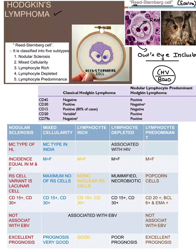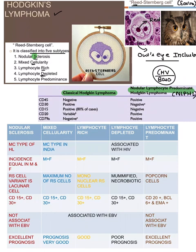We have two types: classical Hodgkin's lymphoma and non-classical, known as NLPHL. The classification has five types: nodular sclerosis, mixed cellularity, lymphocyte rich, lymphocyte depleted, and lymphocyte predominant. Mnemonic: S-C-R-D-P — first you become rich, then you get the plate of money — that's the cycle of life.